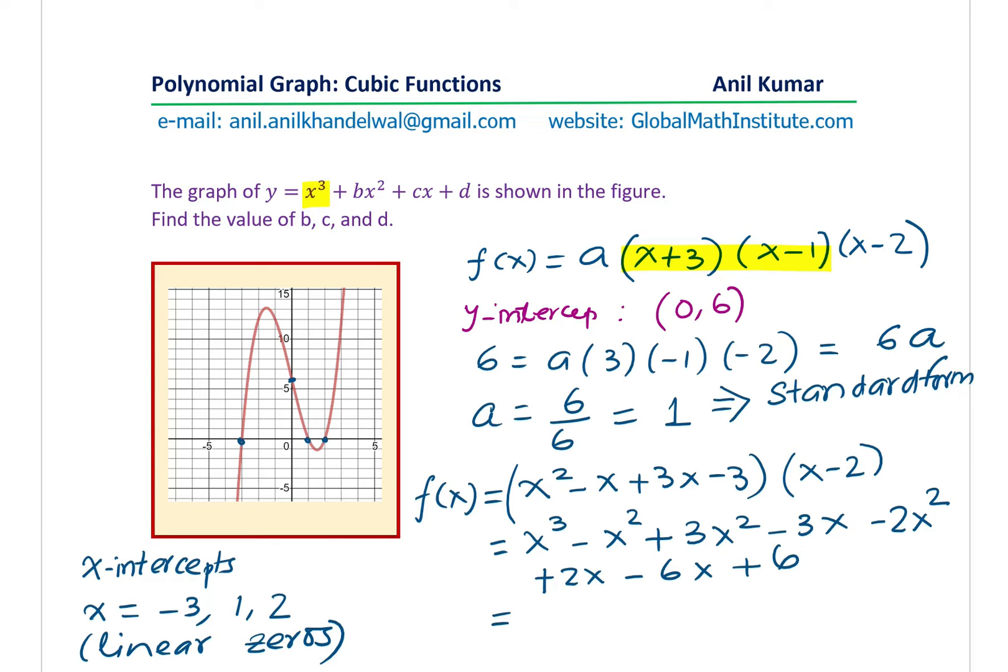Now we can combine the like terms. So we have one term which is x cubed as expected. And now combining the x squared terms, we have a couple of x squared terms here.